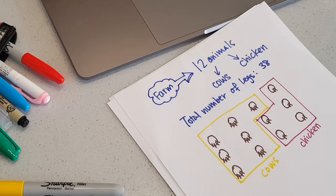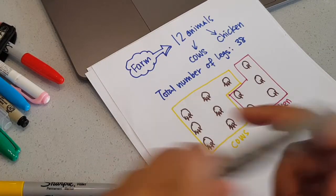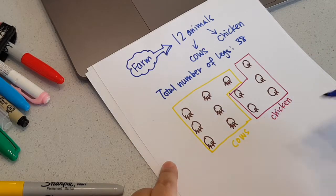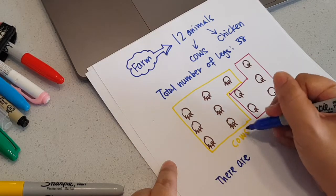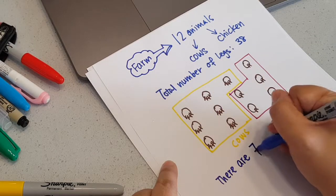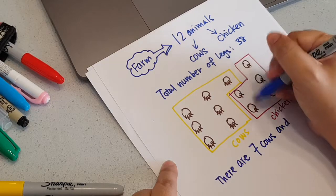From here I will write my statement: 7 cows and 5 chickens. That's my final answer.